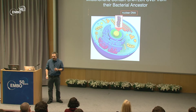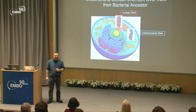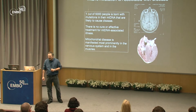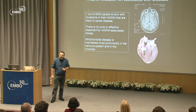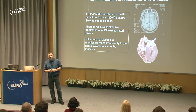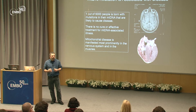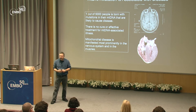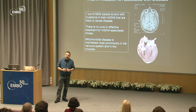We have DNA in the nucleus and also DNA in the mitochondria, and it shouldn't be a surprise that mitochondrial DNA mutation is associated with disease. Around one in five thousand people are born with an inherited mutation that will lead to some sort of mitochondrial disease.